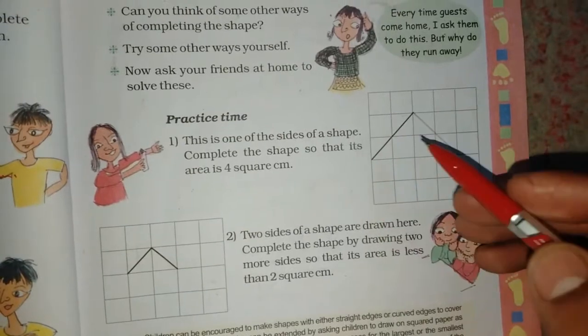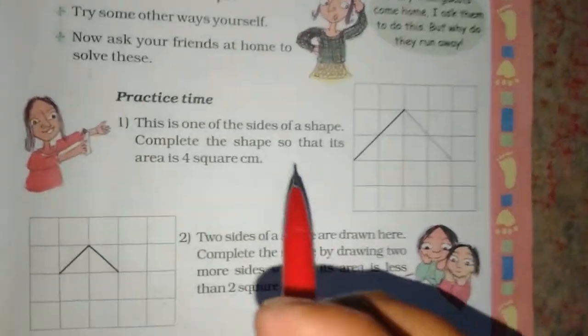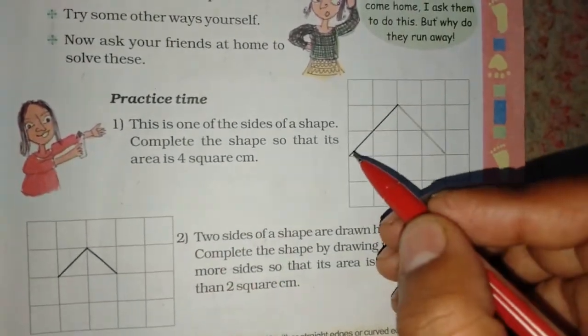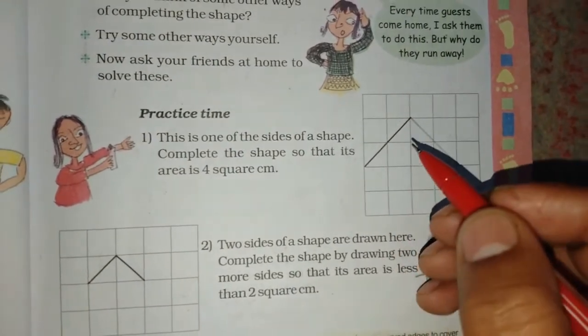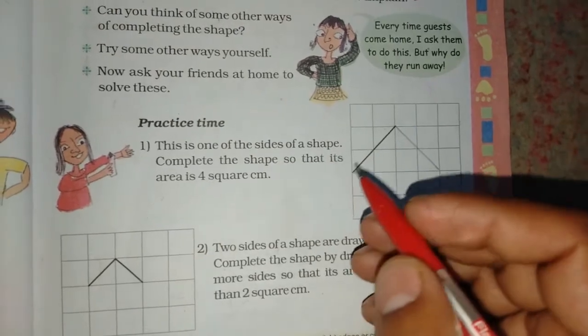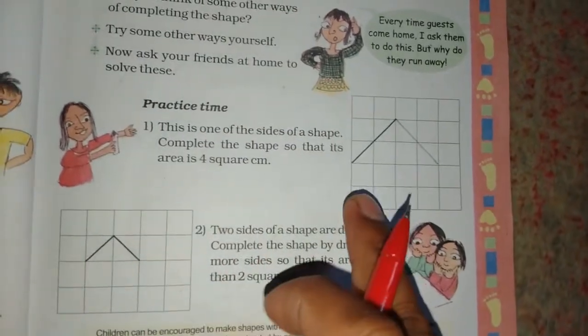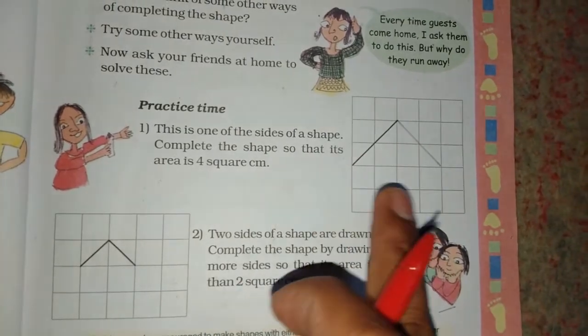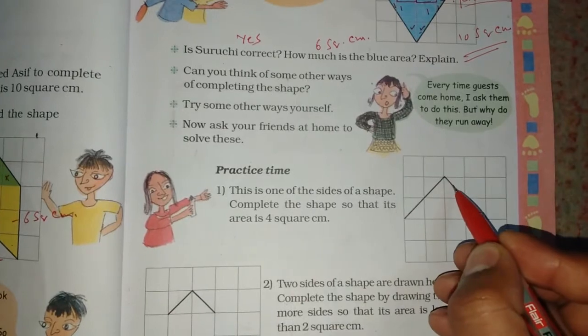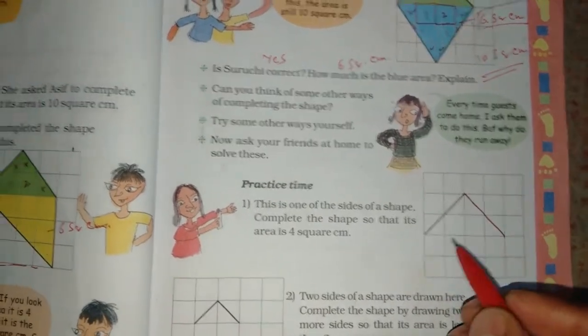One side has been given, and the other one has been drawn. What is in your book? This is one of the sides of a shape. This is one side. So the area is 4 square cm. If we draw this area, it's an area of 4 square cm. This is the other side.